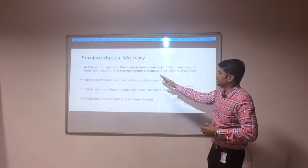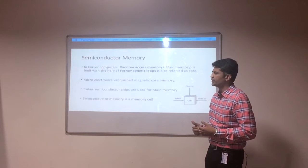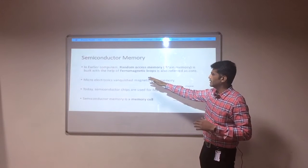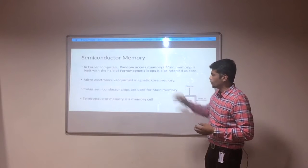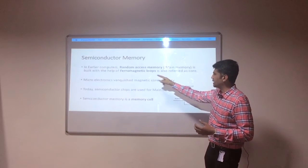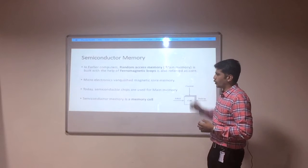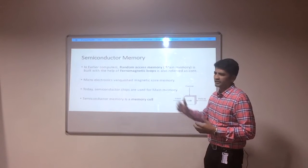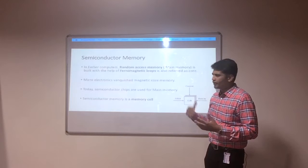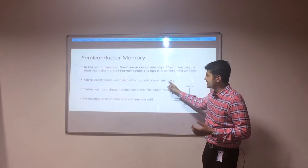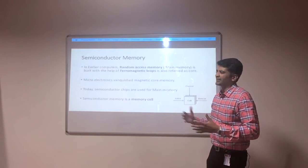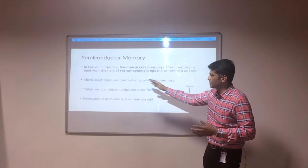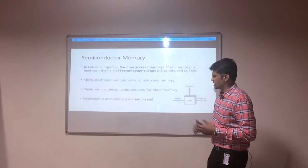In early computers, random access memory was used as main memory. At that time, designers used ferromagnetic loops to build the random access memory. These ferromagnetic loops may be called magnetic cores. After that period, microelectronics overcame this magnetic core memory concept in terms of cost and speed.